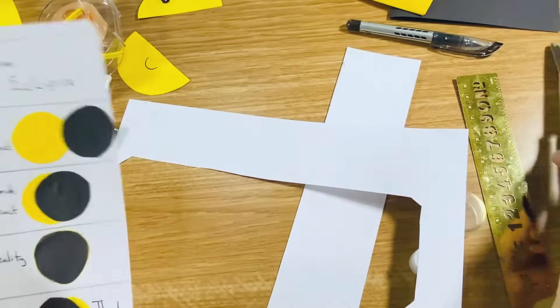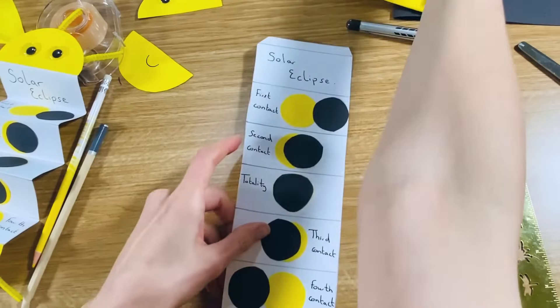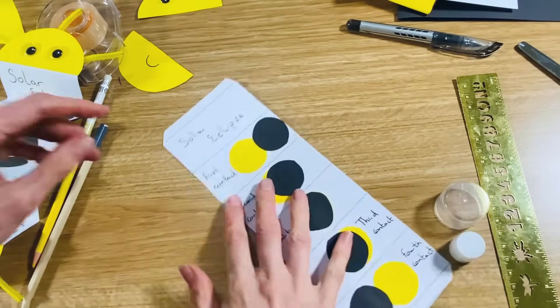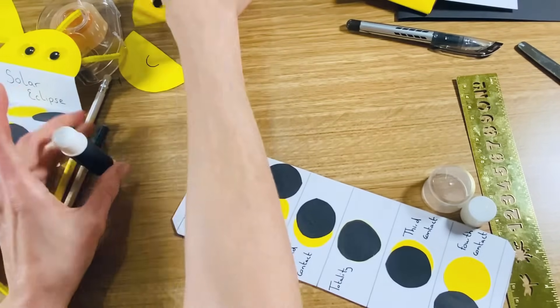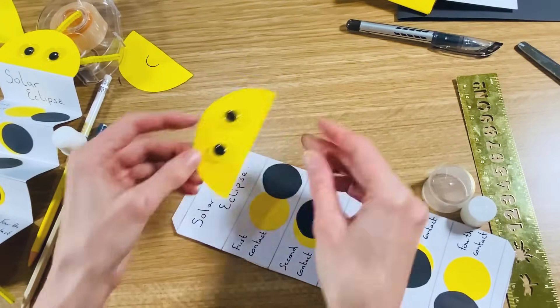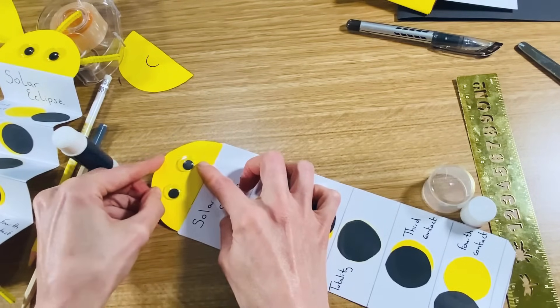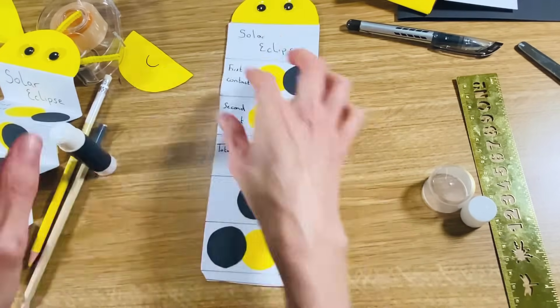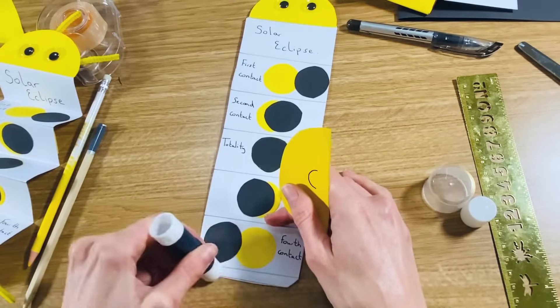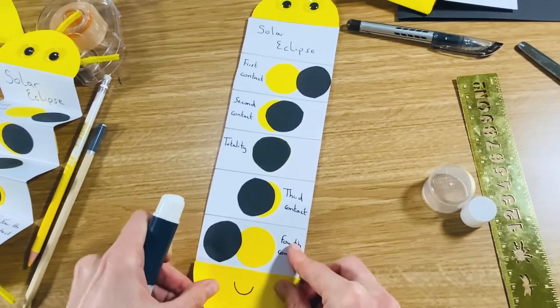So once you've cut everything out, then we're going to add those sun halves that we created earlier by placing some glue on the top there and adding the sun half that has the eyes, the googly eyes if you've chosen to use them, and then at the bottom the sun half with the smiley mouth.